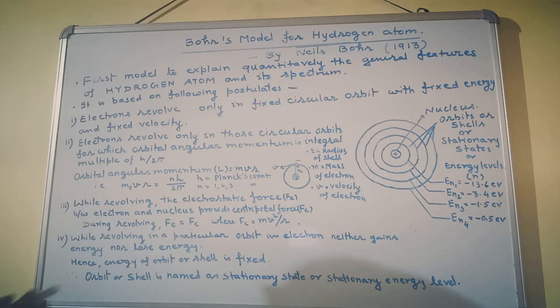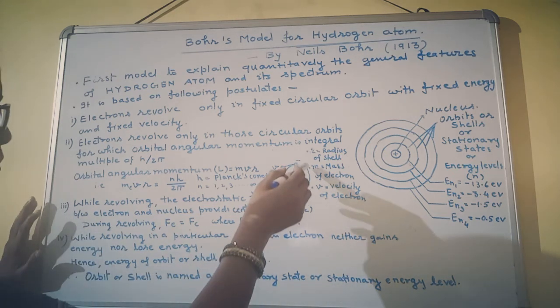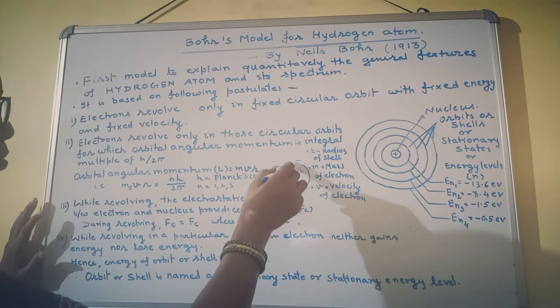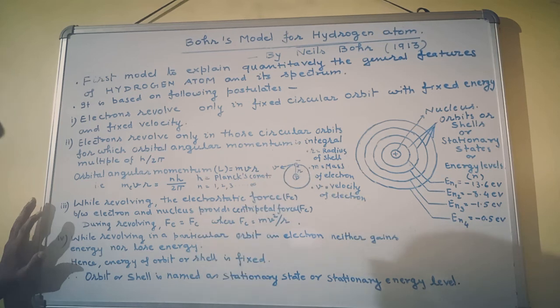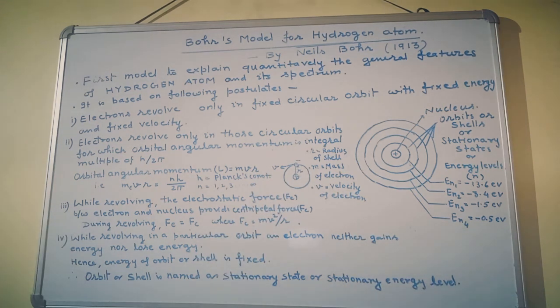When the electron revolves in a circular path, the electrostatic force of attraction between the electron and nucleus provides the electron with centripetal force, and due to this force, the electron revolves in a circular path.